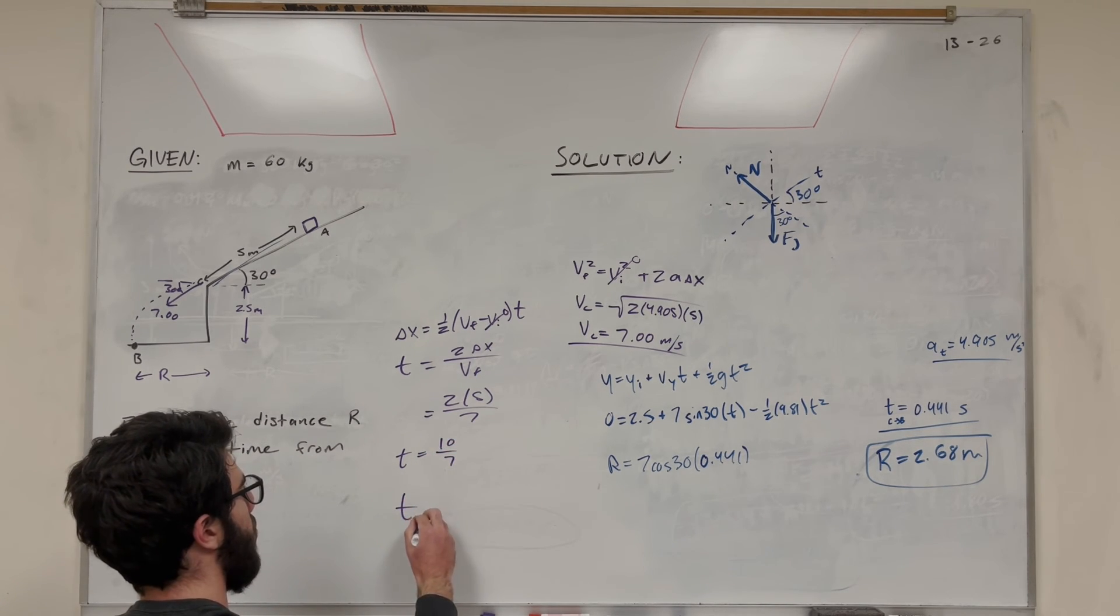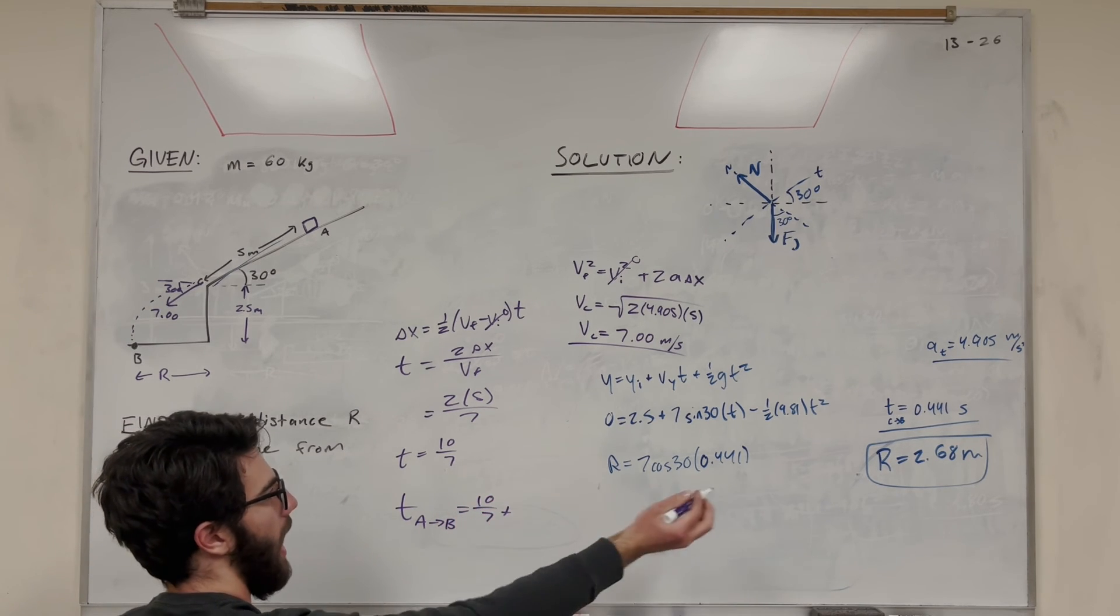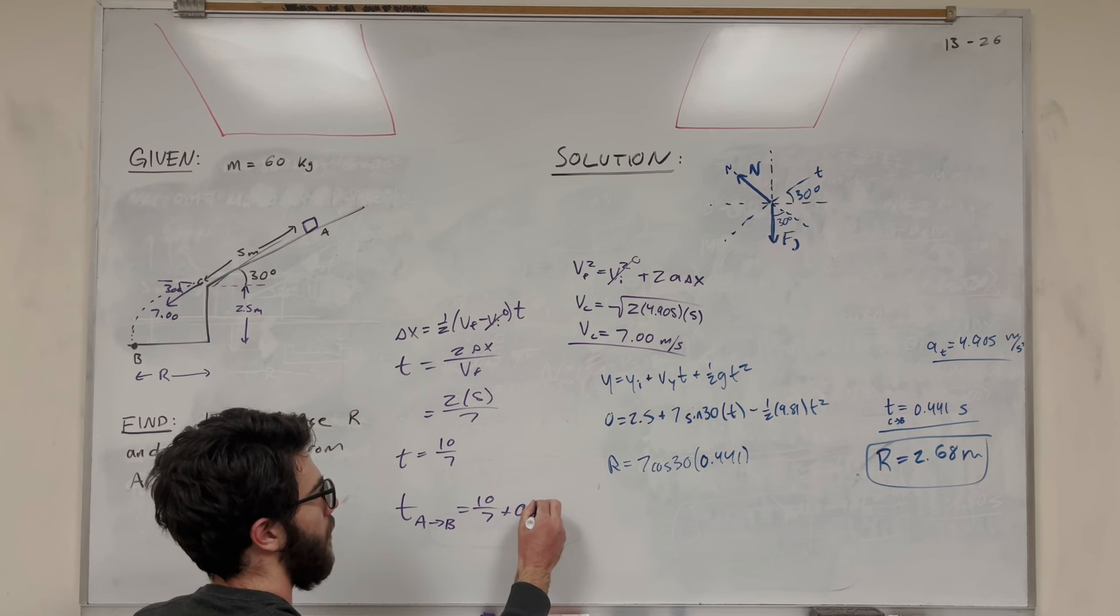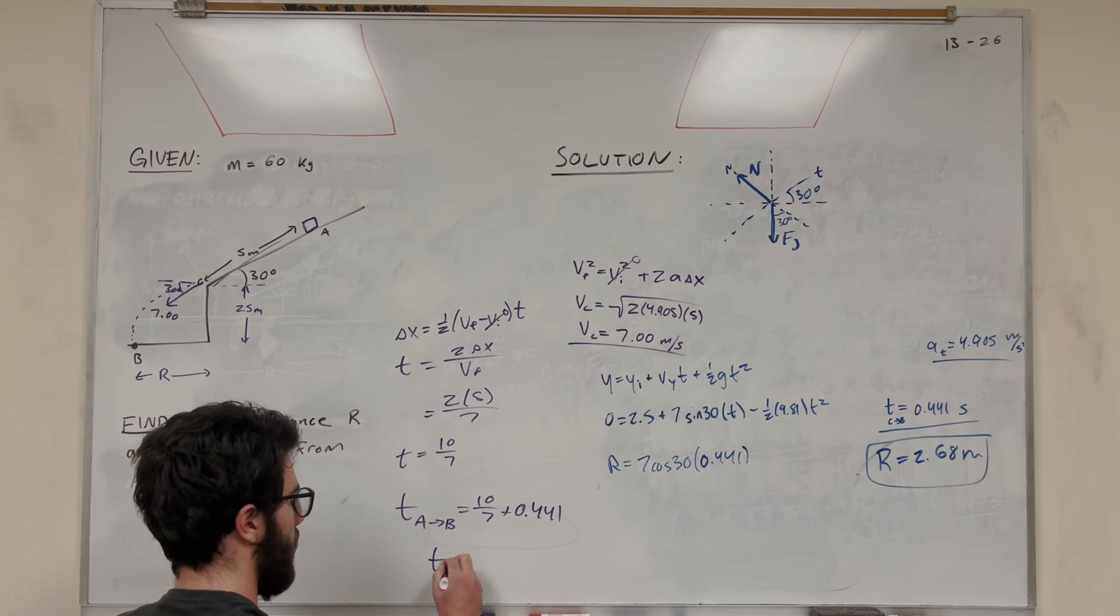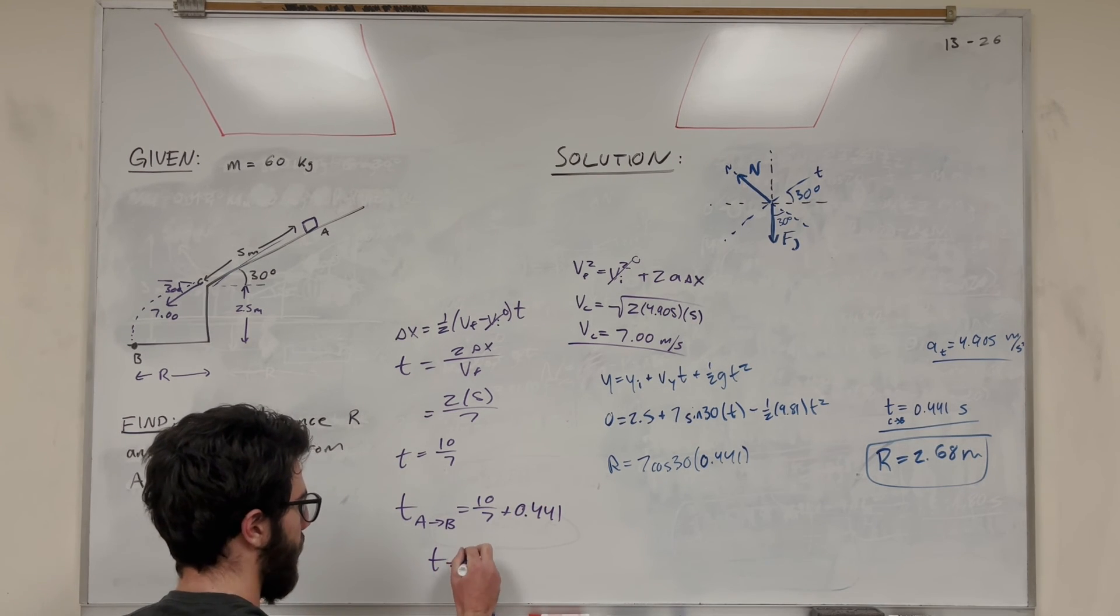So if you want to find that total time from A to B, you're going to take that 10 over 7, add it to the time it takes to go from C to B, 0.441, and that total time is equal to 1.87 seconds.